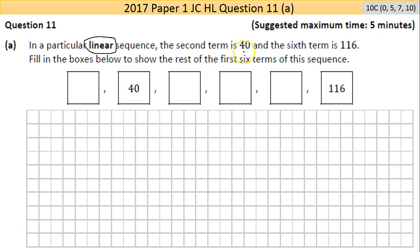The second term is 40, so we see they're written there, and the sixth term is 116. It says fill in the boxes below to show the rest of the first six terms of this sequence.